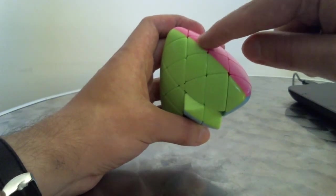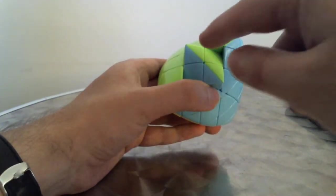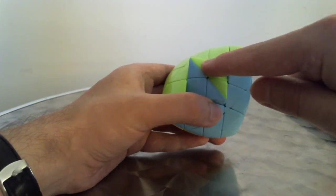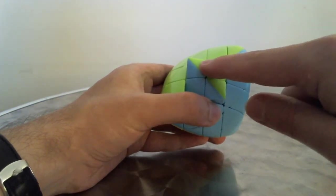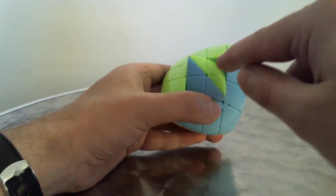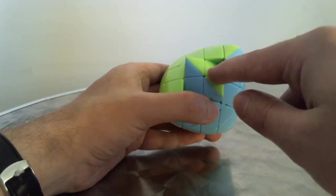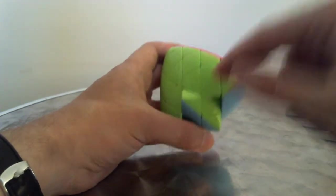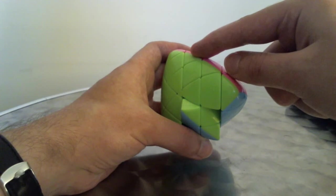What this will do is swap this top piece right here with this center piece on the top left of the center facing us. This center piece will move here to the top right of the front center, whereas this center piece will move up there. So it's a three-cycle that happens.